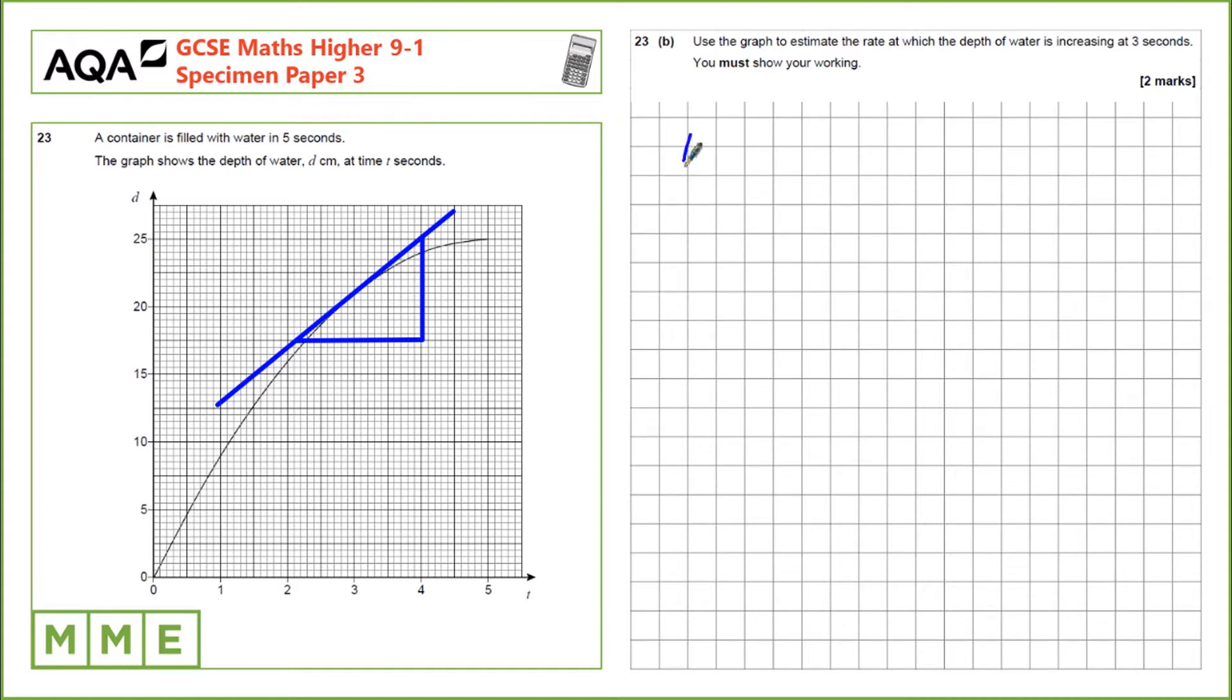Calculate the gradient so we want change in y over change in x. Which for my graph is 7.5 increase in y and the increase in x is 1.95. So 7.5 over 1.95 was approximately 3.8.